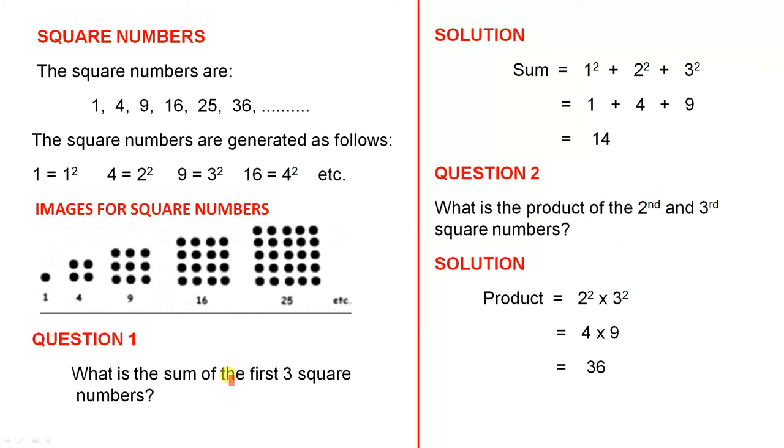Let's look at some questions. Question 1. What is the sum of the first three square numbers? The solution. The sum equals 1² plus 2² plus 3², which is 1 plus 4 plus 9, and that's 14.